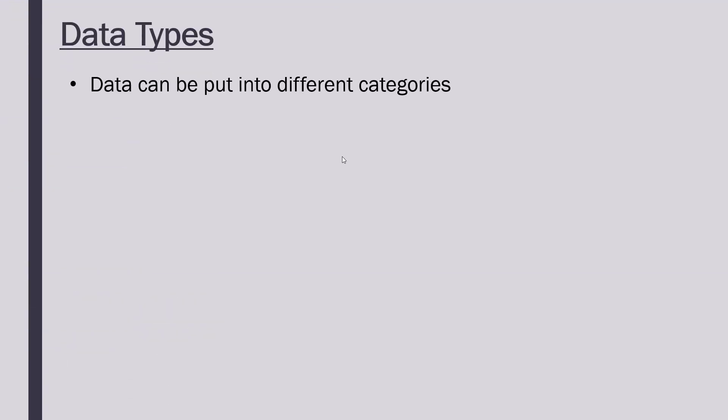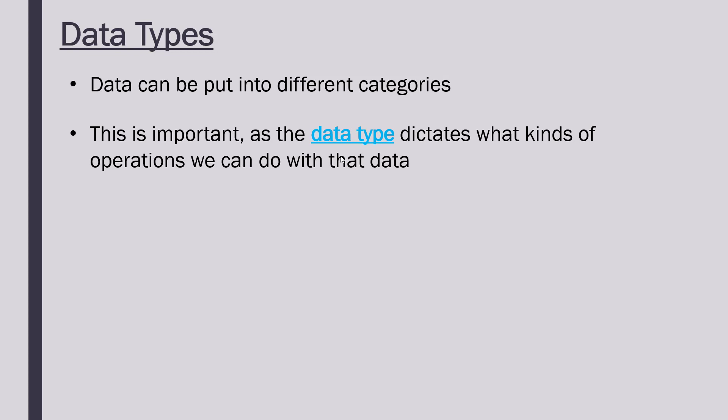We can put data into different categories and this is really important because the type of data, the category of data, is going to dictate what kinds of operations we can do with that data.